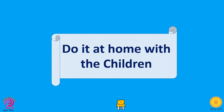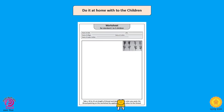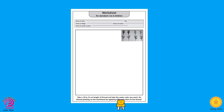Now let's move on to the next activity called Do It at Home with the Children. Take a 10 to 15 centimeter length of thread and take the watercolor you want. Do thread painting on the worksheet by applying different colors to the thread. Did the children enjoy doing this worksheet? Do share your experience with us.